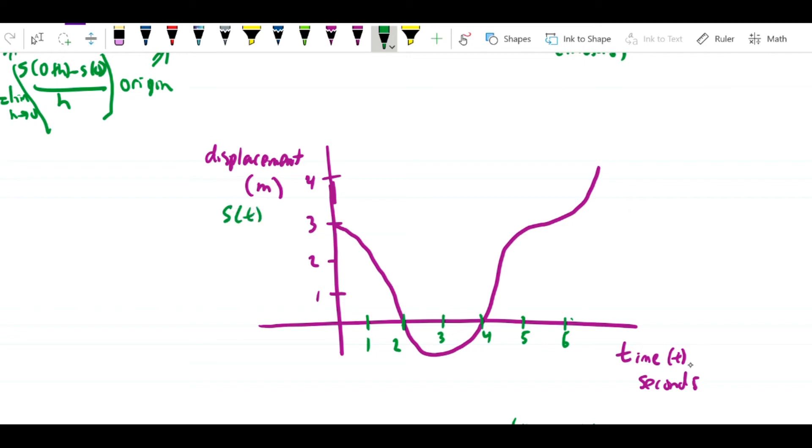If that's s(t) and this is t, we're mapping distance from the origin on the vertical axis and time since the beginning on the horizontal axis.